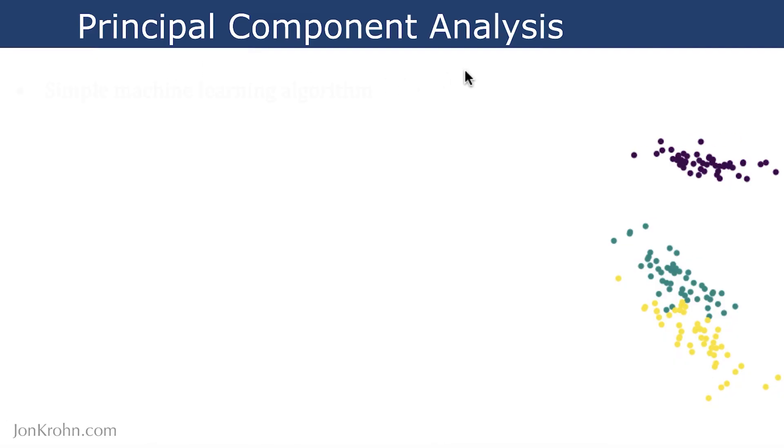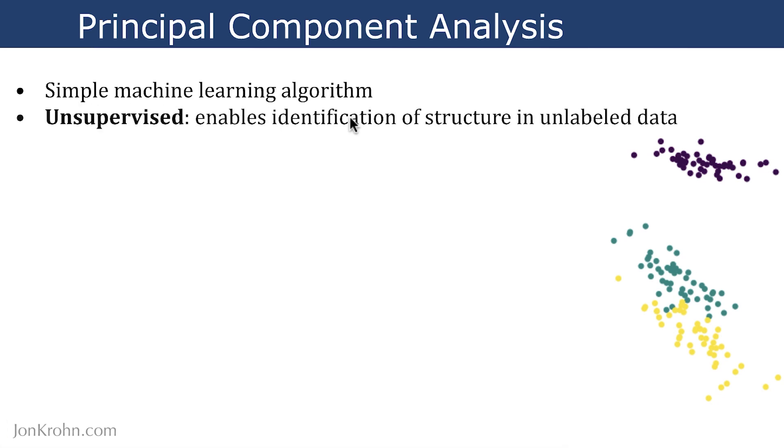Principal component analysis is a simple machine learning algorithm. It is unsupervised. This means that it enables the identification of structure in unlabeled data. So if you have a bunch of data,